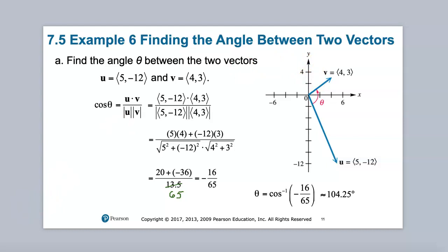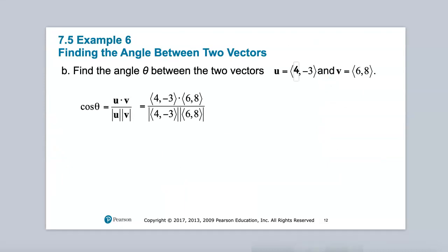Okay, so let's look at another example. So let's look at this example here where we need to find the angle between these two vectors, (4,-3) and (6,8). We don't even need to draw a diagram.